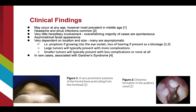However, most are asymptomatic, and an osteoma's symptomatic nature is heavily dependent on size and location. Large tumors typically present with more complications while smaller tumors present with less. These complications are largely dependent on location, as represented in Figures 1 and 2, which show a prominent osteoma of the frontal bone and an osteoma in the auditory canal. Osteomas of the auditory canal could cause hearing loss, and osteomas growing into the eye socket could cause proptosis.